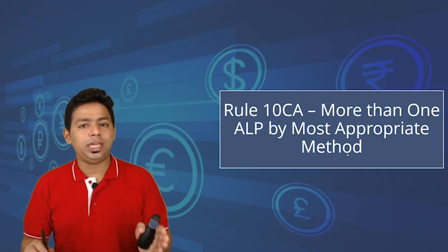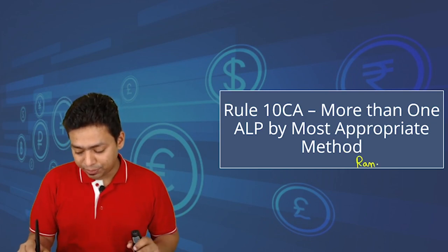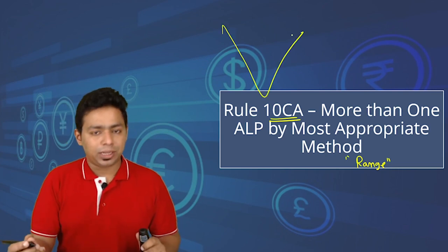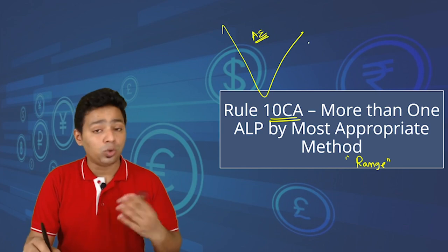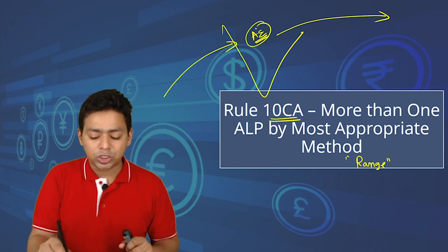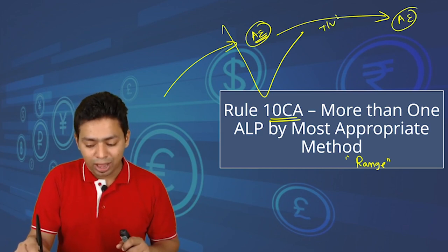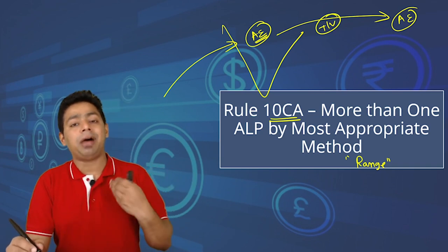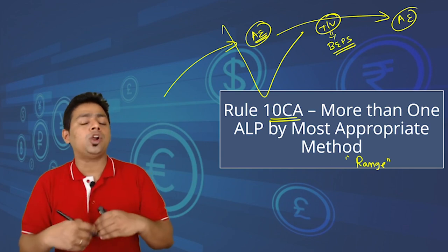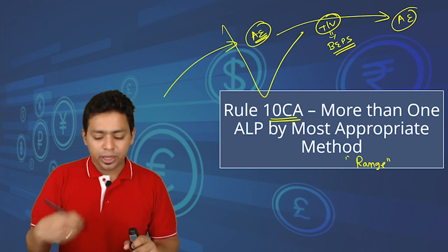We are studying transfer pricing and have learned all six methods of computing arm's length price. In this lecture, we will learn what the range concept is and why it was introduced in income tax law by Rule 10CA. When an associated enterprise has done transactions with another associated enterprise, the transaction value may not be the true value — it may be manipulative, resulting in base erosion and profit shifting. We compare this value with the arm's length price, most commonly using the Comparable Uncontrolled Price (CUP) method.